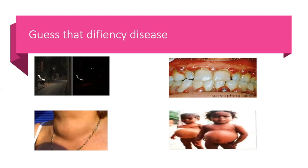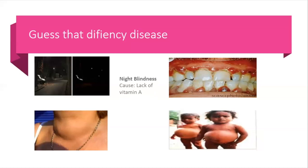Now I have some pictures and I want you to guess the deficiency disease. The first picture is a comparison: one person who can see rather normally at night, and another person who is struggling. Students identify it as night blindness. What causes night blindness? A lack of vitamin A — very good.